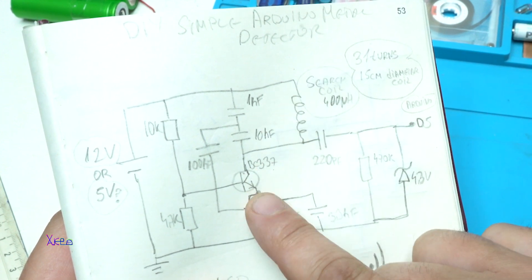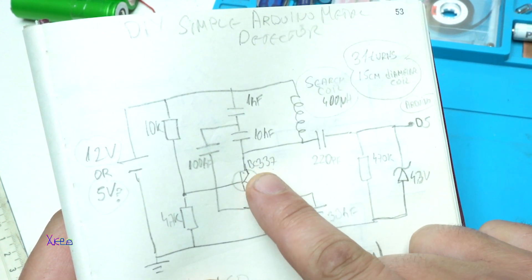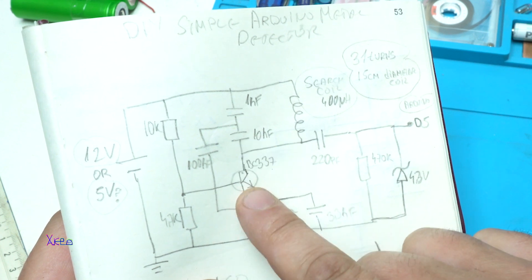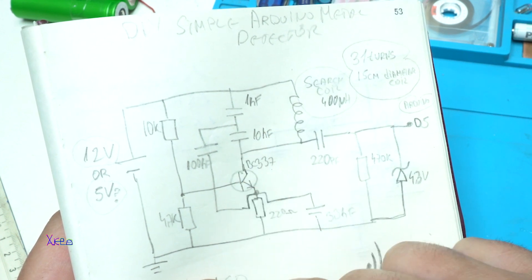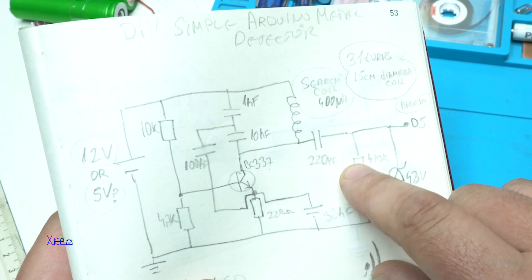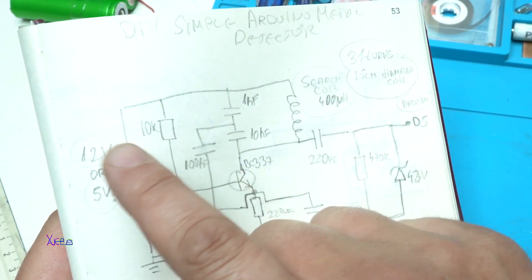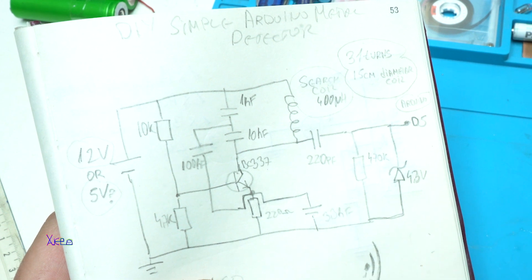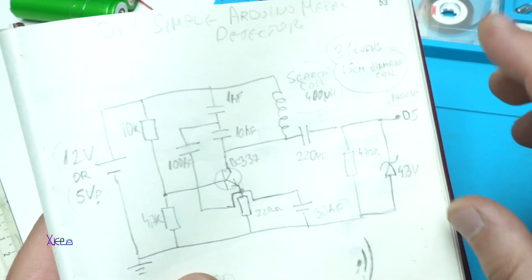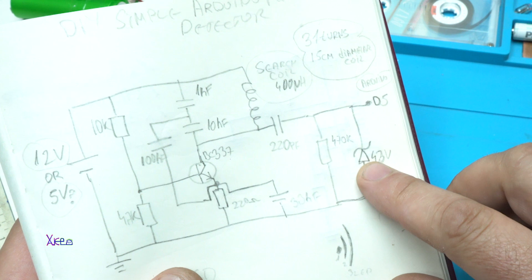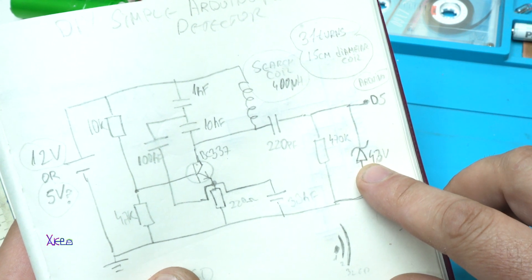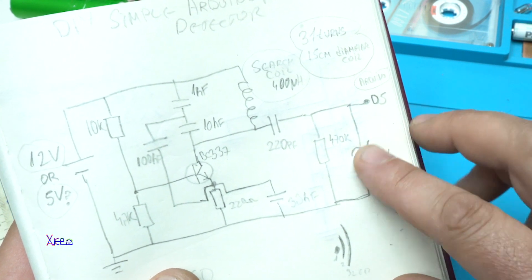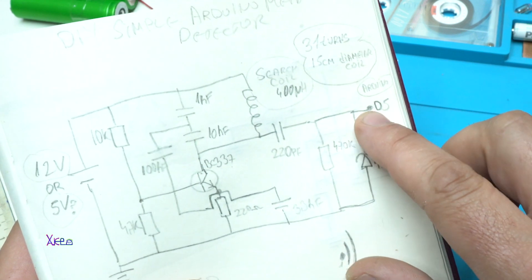There is just only one NPN transistor which is BC337. That is critical and must be this transistor. This circuit or this oscillator is working on 5 volts. And this is the Zener diode that needs to be 4.3 volts exactly.